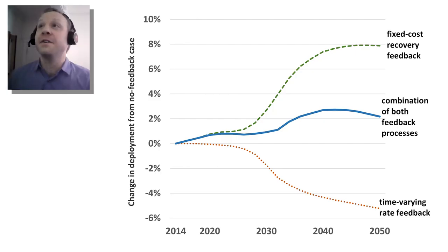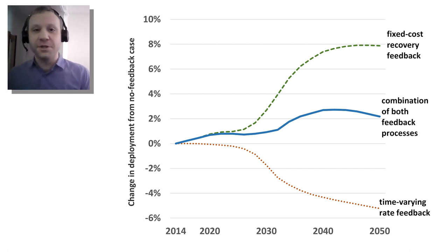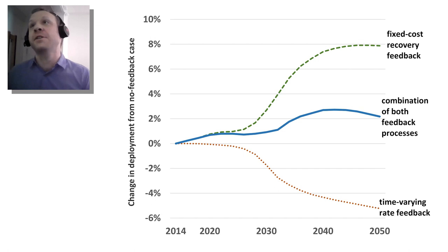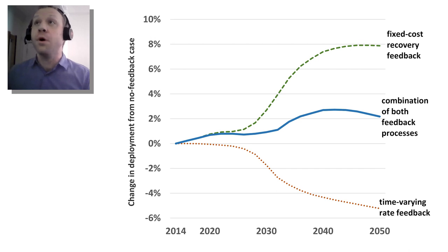The first part of this graph shows the impact of the fixed cost recovery feedback. The authors' first conclusion is that yes, this feedback will result in accelerated PV investment — growth in total distributed PV capacity on the system relative to a no-feedback model — to the order of about eight percent by mid-century. So it does make a difference, and behind this escalated PV growth with the feedback in play is potentially some negative rate ramifications.